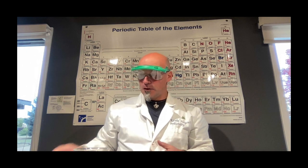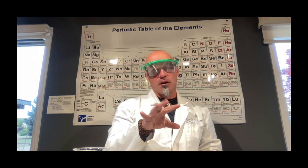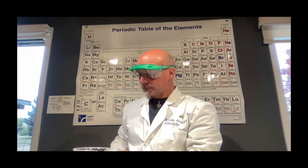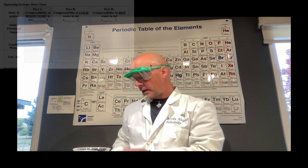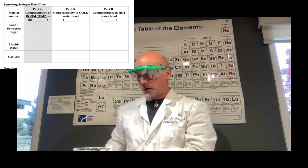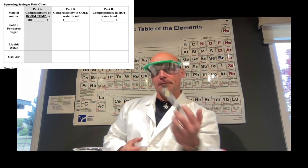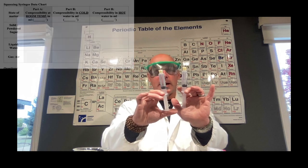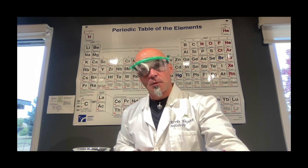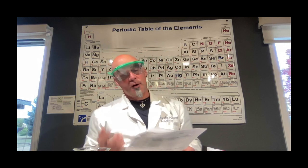Now all that's left is to see if your hypothesis was correct. Record the room temperature on your chart — your data chart is on the second page. Then compress the plunger on the syringe with powdered sugar and the one with water, and record the results on the data table. That completes Part A of the experiment.